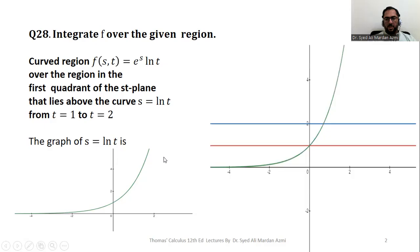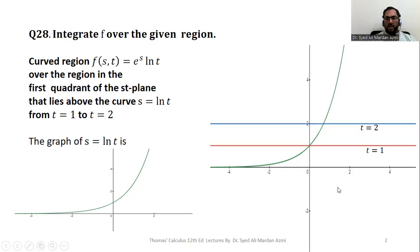The black horizontal line represents the s-axis, and the vertical black line represents the t-axis. The red line is t = 1, the blue line is t = 2, and the curve is s = ln(t). The closed region is bounded by these curves in the st-plane.